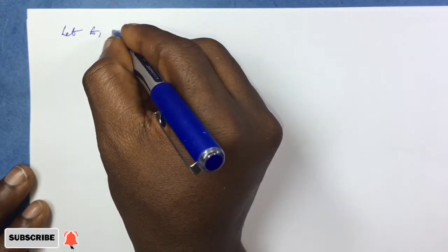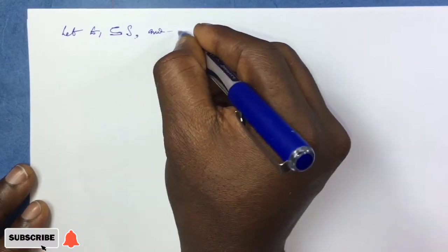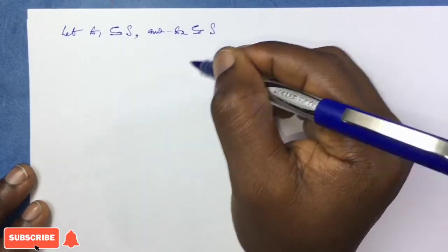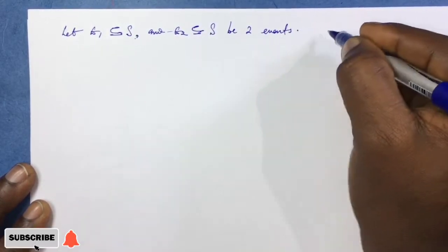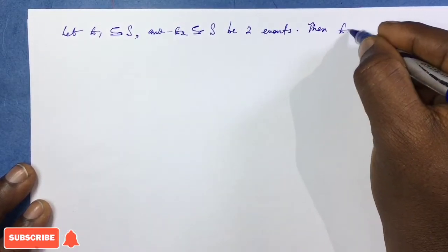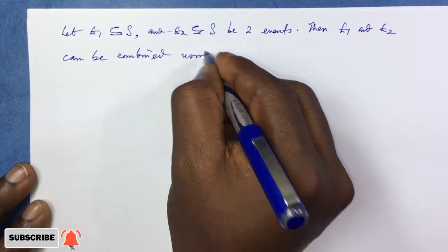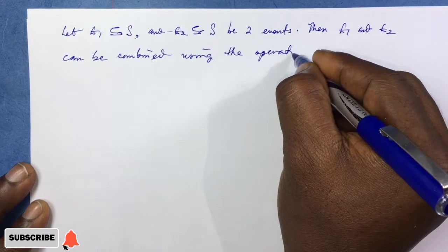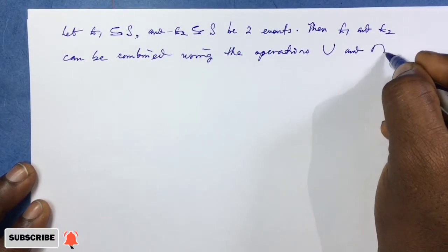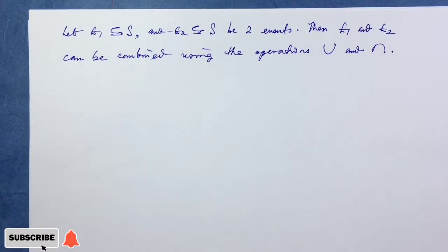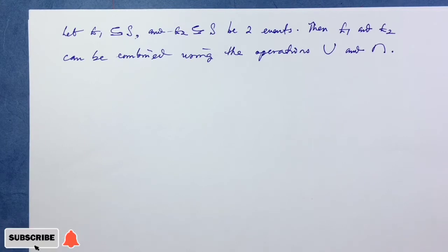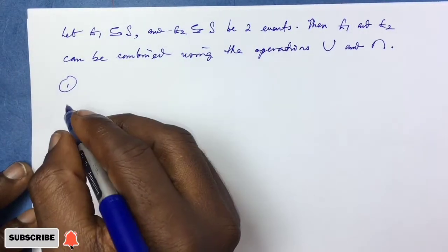Let E1, which is a subset of S (the sample space), and E2, which is also a subset of S, be two events. Then E1 and E2 can be combined using the set operations union and intersection. So it is possible to use these set operations to combine these two event spaces E1 and E2 drawn from the same sample space S.